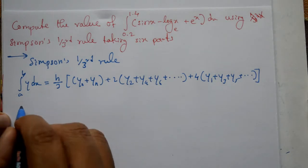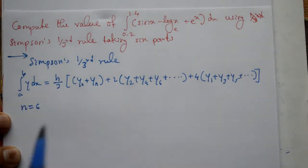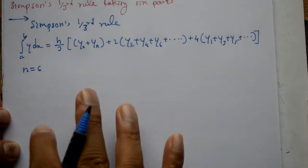We are taking 6 equal parts, so n equals 6. We need h and y values, then we'll get the final value.